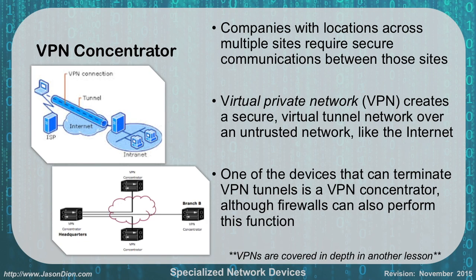A VPN concentrator allows you to connect multiple locations at multiple different sites with secure communications over an untrusted network. Somebody at home on their personal computer who wants to connect to their work network can create a VPN tunnel, go over the untrusted internet, and dial back in to their intranet at work. That creates a secure virtual tunnel over an untrusted network. The VPN tunnel is terminated on the other end by what's called a VPN concentrator.